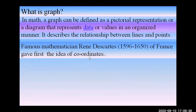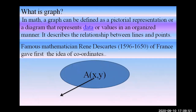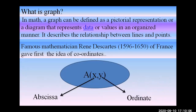Famous mathematician René Descartes of France first gave the idea of coordinates. For a point A with values x and y — x and y can be any number, positive or negative — this x-value is called the abscissa, the y-value is called the ordinate, and the point (x, y) is called a coordinate.